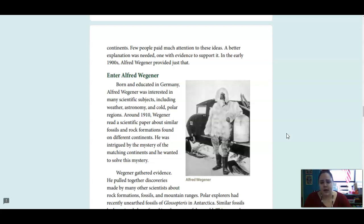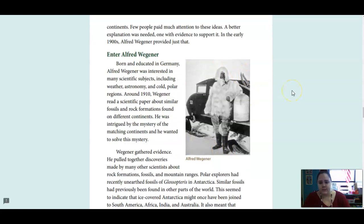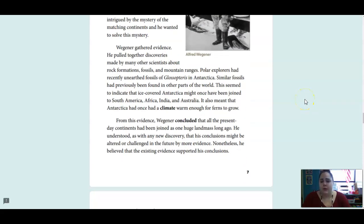In the early 1900s, Alfred Wegener provided just that. So, this is Alfred Wegener. He was born and educated in Germany. He was interested in many scientific subjects, including weather, astronomy, and cold polar regions. Around 1910, Wegener read a scientific paper about similar fossils and rock formations found on different continents. He was intrigued by the mystery of the matching continents, and he wanted to solve this mystery. So, Wegener gathered evidence. He pulled together discoveries made by many other scientists about rock formations, fossils, and mountain ranges.